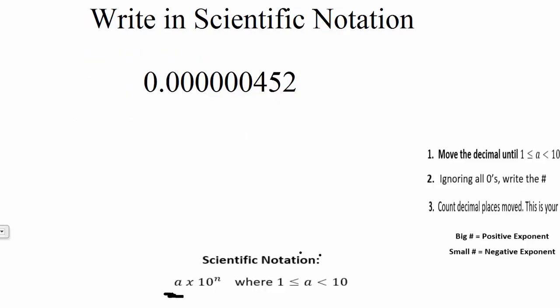Okay, so let's take a look at an example like this, where we have a decimal to start off with. So step one, move the decimal until we have a number that's greater than or equal to 1 but less than 10. So we would have to move it until it is right over here between the 4 and the 5.